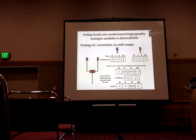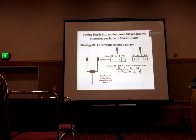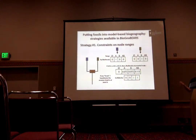You can do this if you think you know the range of that node, or more realistically, if you hypothesize it. If you have a fossil in area B but don't know whether it also lived in A, you can multiply by 1, 1 for ranges B and AB. So that's a simple way to get at this and change the likelihoods.